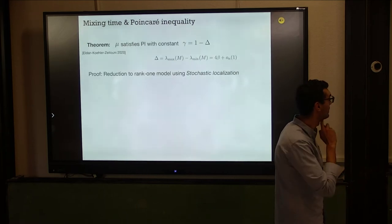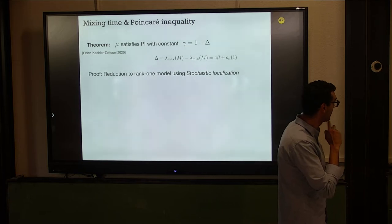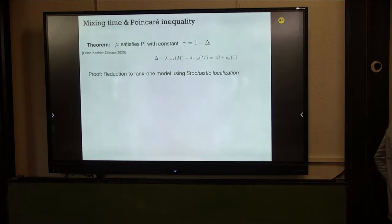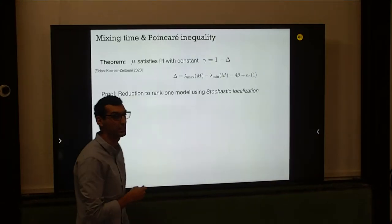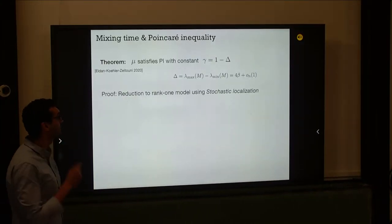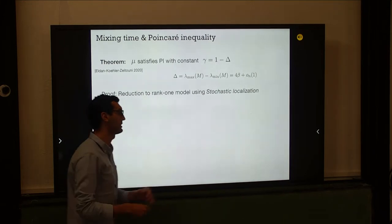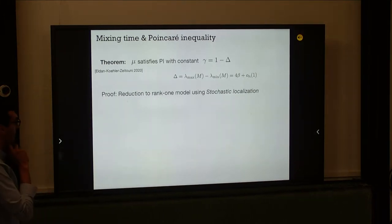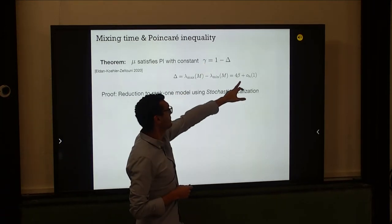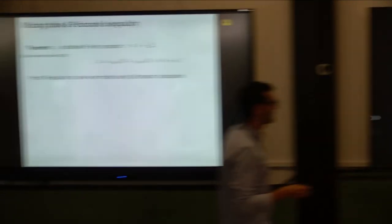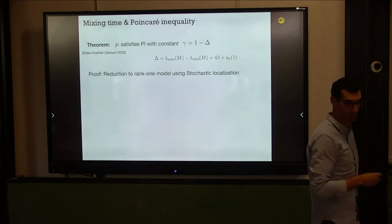There's a theorem by Eldan, Kolar, and Zeytuni that says mu satisfies a Poincaré inequality with constant gamma equal to one minus capital Delta, where Delta is the spectral diameter of the matrix — the largest minus minimal eigenvalue. Since my matrix is GUE, the spectral diameter is 4 beta by the semicircle law. You want this to be positive, so beta has to be smaller than one fourth. The proof uses a clever reduction to a rank-1 model via stochastic localization.